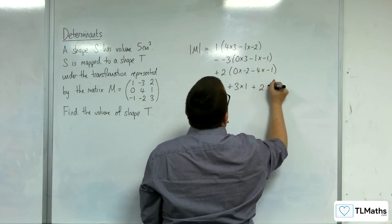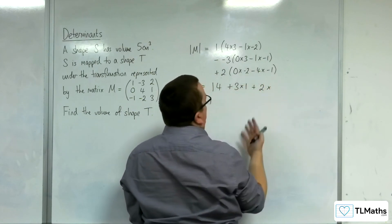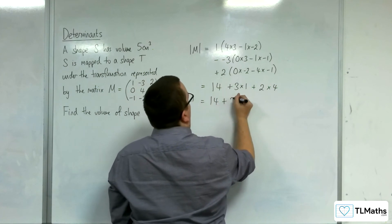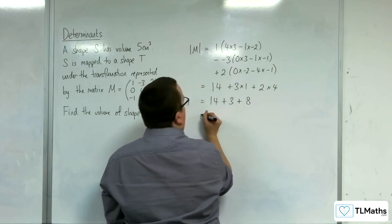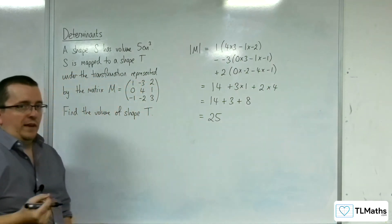Plus 2 lots of, well, that's 0 there. Minus 4 times minus 1 is 4. So we have 14 plus 3 plus 8, which is equal to 25. So that's the scale factor.